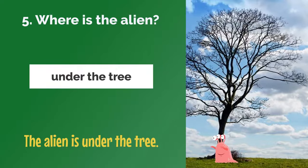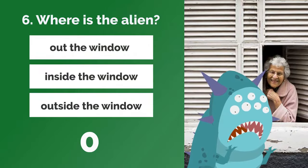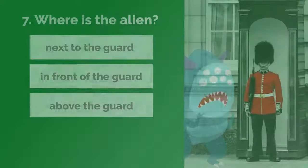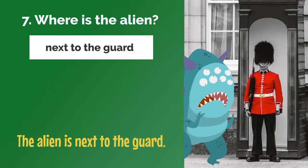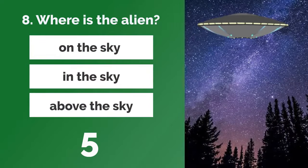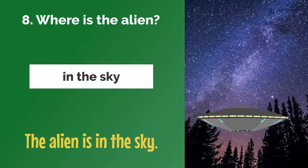The alien is under the tree. The alien is outside the window. The alien is next to the guard. The alien is in the sky.